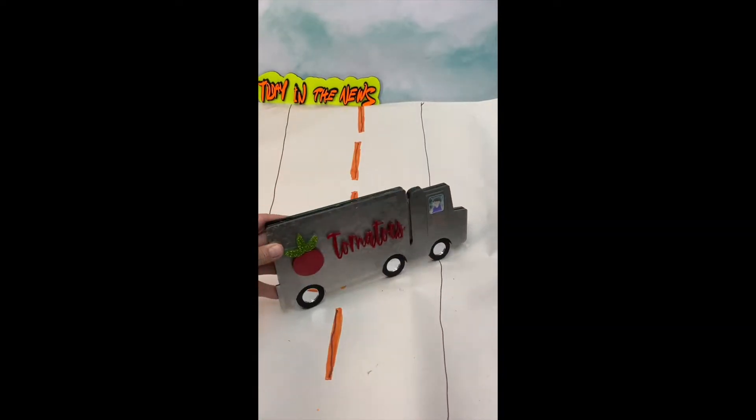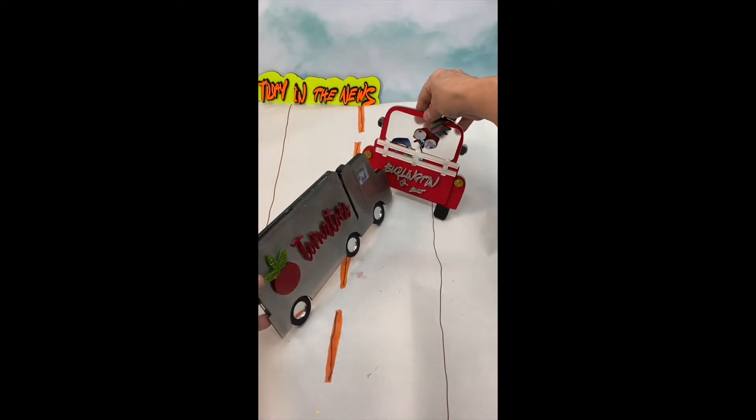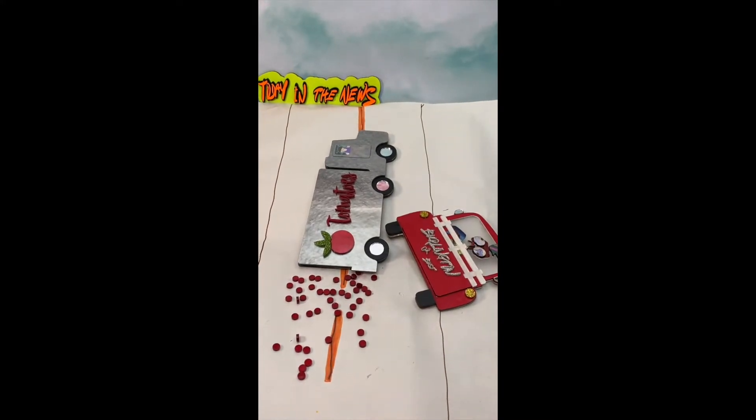The first crash takes place in Vacaville, California. Californians were in for a saucy surprise after a truck hauling a load of tomatoes crashed, spilling tomatoes across several lanes on the highway.